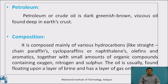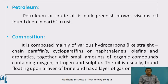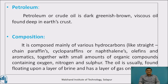Now, what is petroleum? Petroleum or crude oil is a dark greenish brown viscous oil found deep in the earth's crust. Generally, petroleum is composed mainly of various hydrocarbons like straight chain paraffins, cycloparaffins or naphthenes, olefins, and aromatics, together with small amounts of organic compounds containing oxygen, nitrogen, and sulphur. The oil is usually found floating upon a layer of brine and has a layer of gas on it.